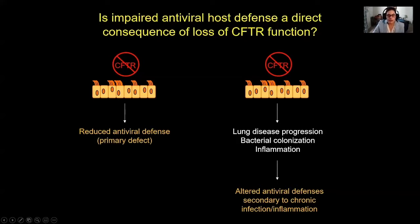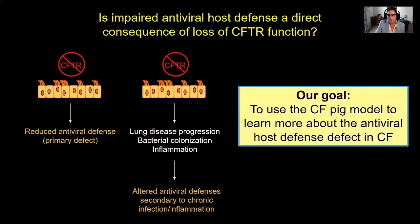One challenge in this field is that to distinguish between these two possibilities, you would want to look at responses of airway epithelia from very young patients, ideally before the onset of infection and inflammation, which is difficult practically — it's hard to get samples from such young patients. One of the goals of our research group has been to address this by using the CF pig as an animal model, giving us the ability to do experiments in newborn animals that have not yet begun to develop lung disease.